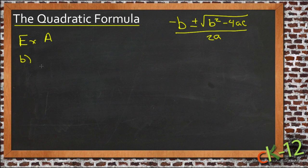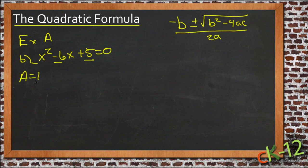We'll start with B here. So B was x squared minus 6x plus 5 equals 0. So we need to find a, b, and c, so a is 1, b is negative 6, and c is 5.